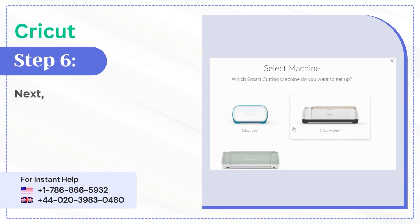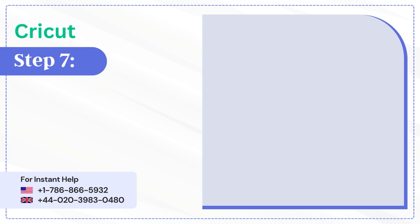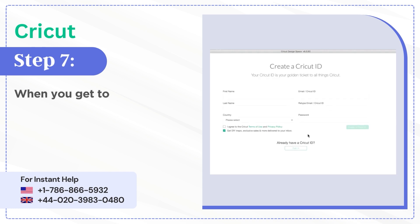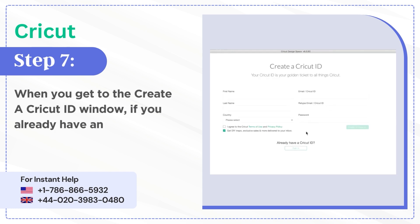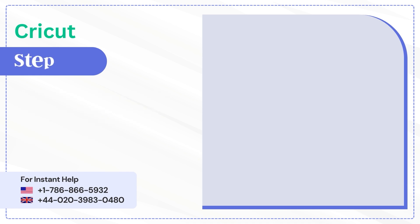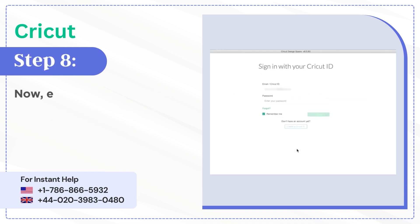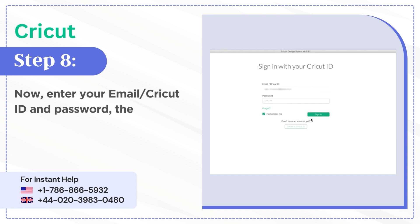Step 6: Next, select the Smart Cutting Machine. Step 7: When you get to the Create a Cricut ID window, if you already have an account, click on Sign In. Step 8: Now enter your email or Cricut ID and password.